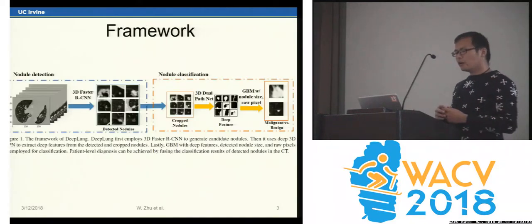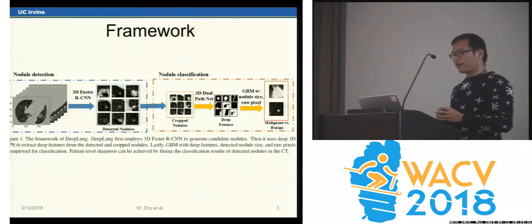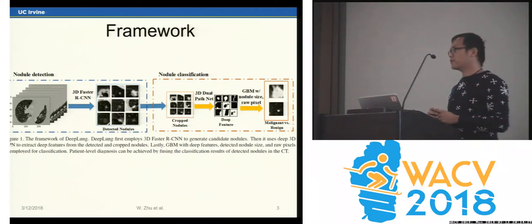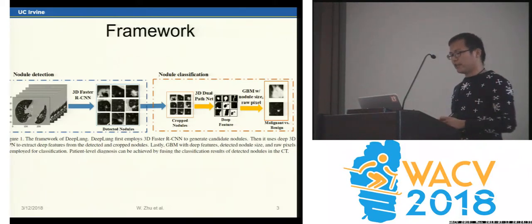We first design a three-dimensional Faster R-CNN with U-Net and a three-dimensional dual path network for nodule detection.